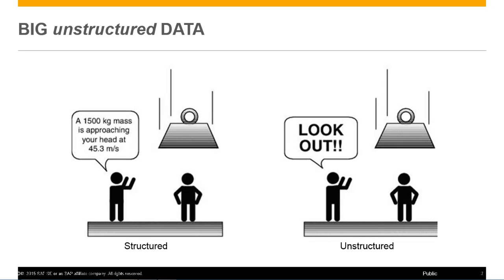Structured data typically can be easily organized — it's clean and analytical, where the information is on hand. As for the structured example on the left, we know what the context of the situation is: a 1500 kilogram mass approaching this person's head at 45.3 meters per second. With the unstructured example, it represents a lot of how data is received today — it does not give us any great context of the situation, and therefore the information may not be very useful, especially with an element of the unknown that can have real consequences.